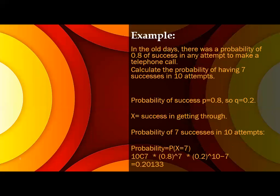We are attempting this one for 10 attempts, so n is clear. And we expect 7 to be success. That means x equals 7.